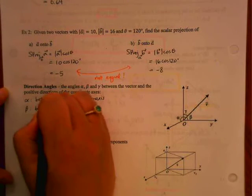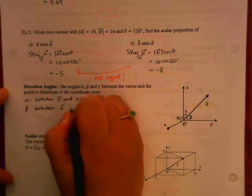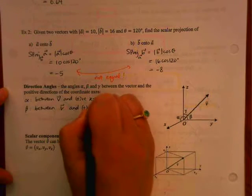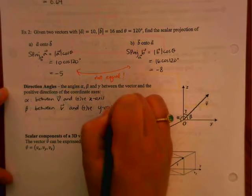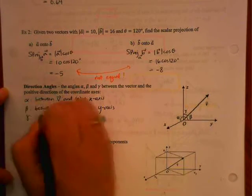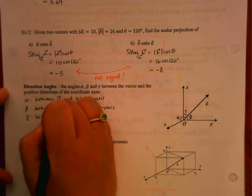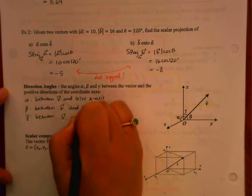Beta was the angle between the vector V and the positive y-axis, and then gamma was the angle. Yeah, what's wrong?